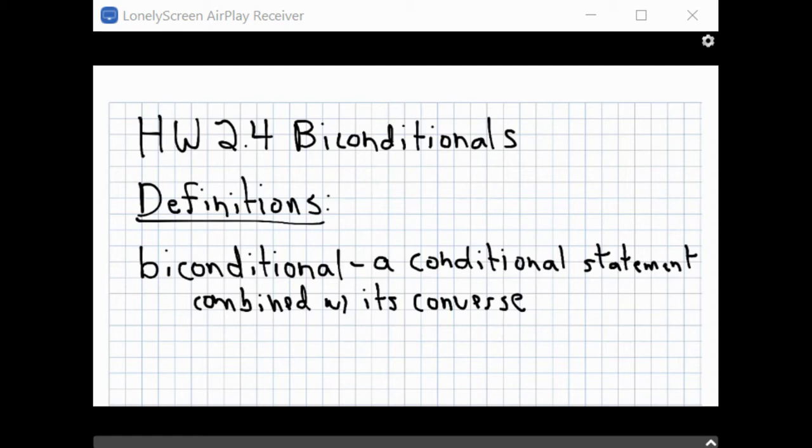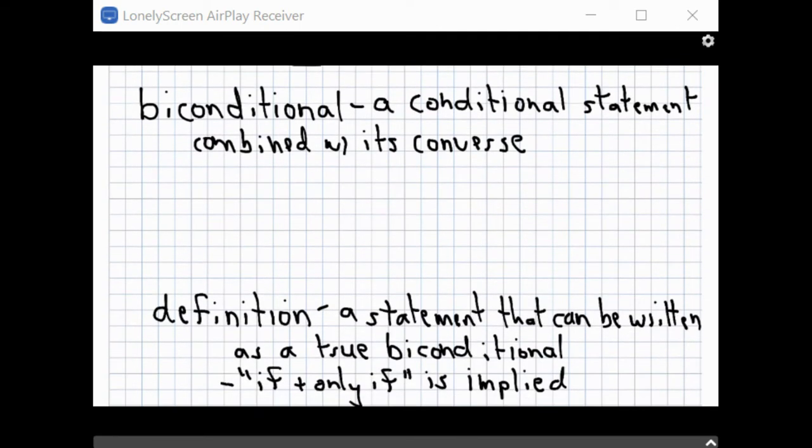So let's go ahead and start with the definitions. This is our notes for 2.4. We only have two terms. One is biconditional. A biconditional is just a conditional statement combined with its converse. So if a conditional statement is if P, then Q.